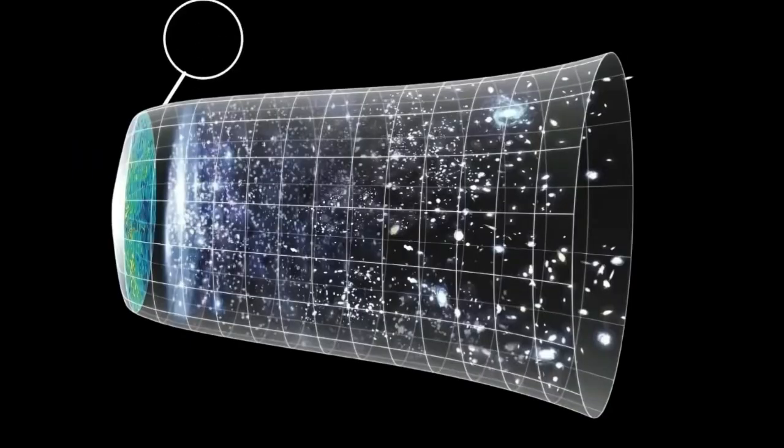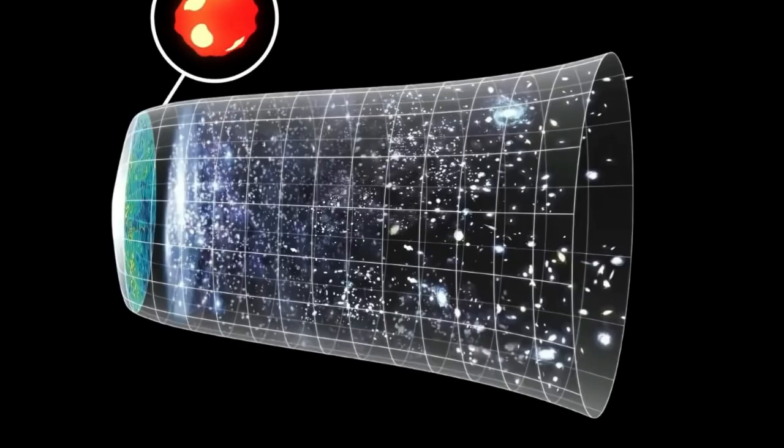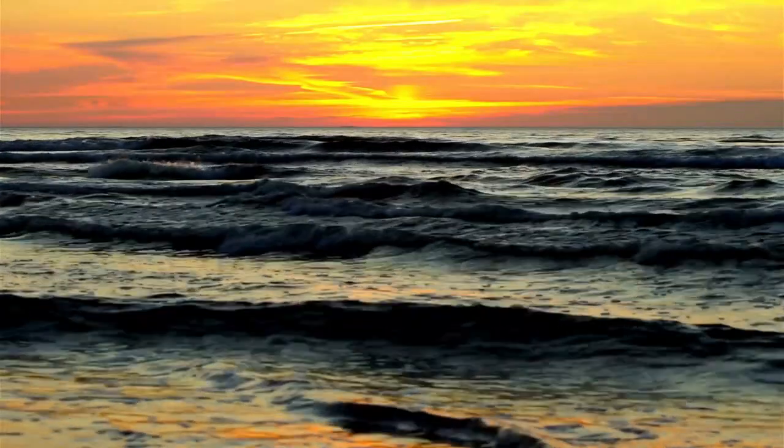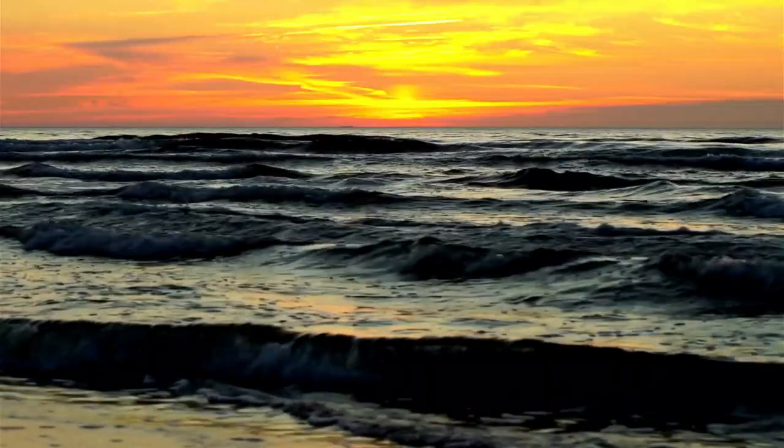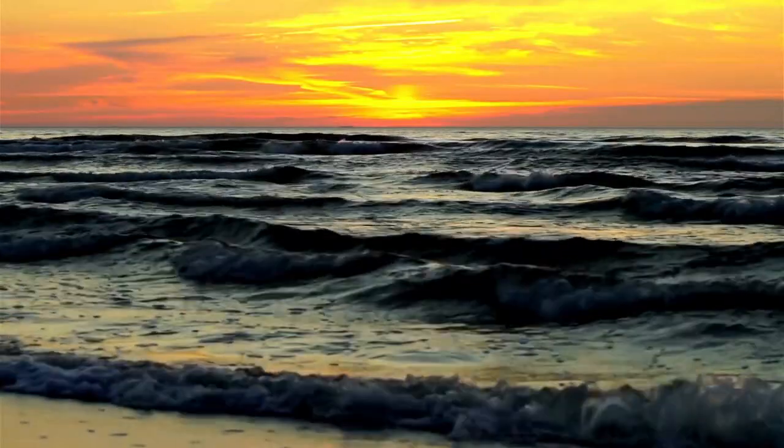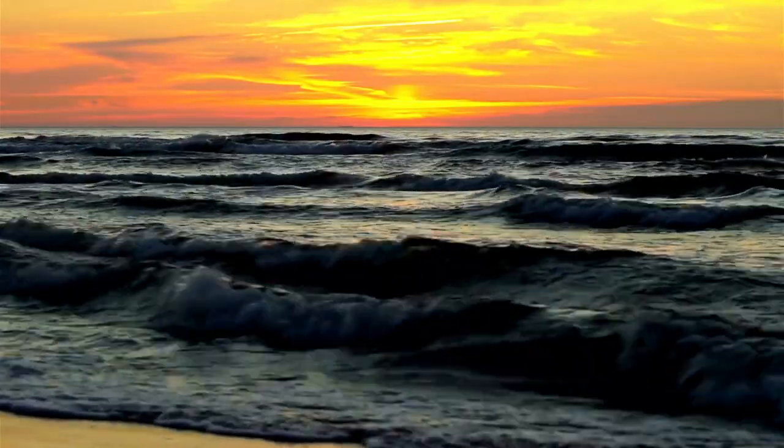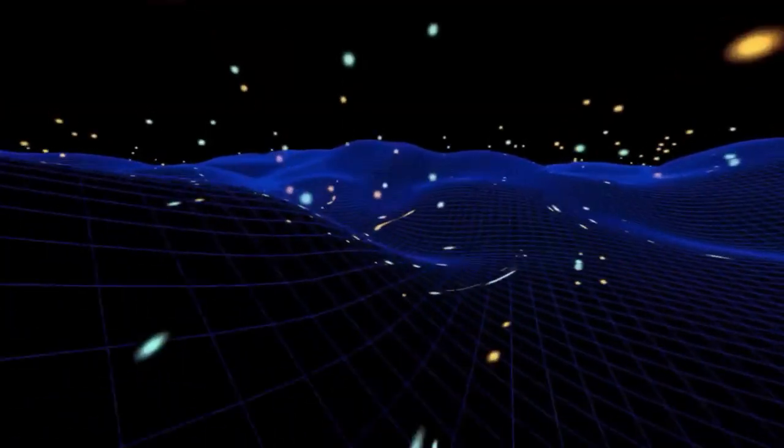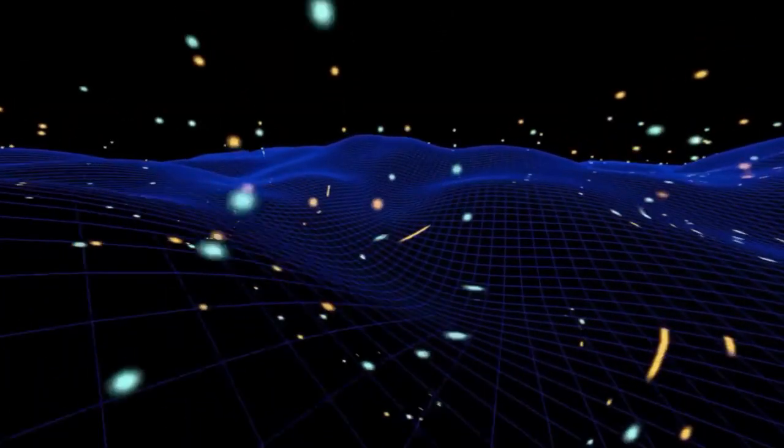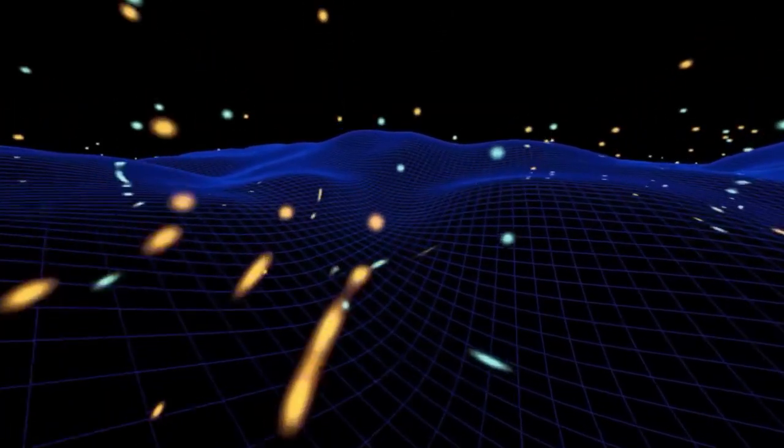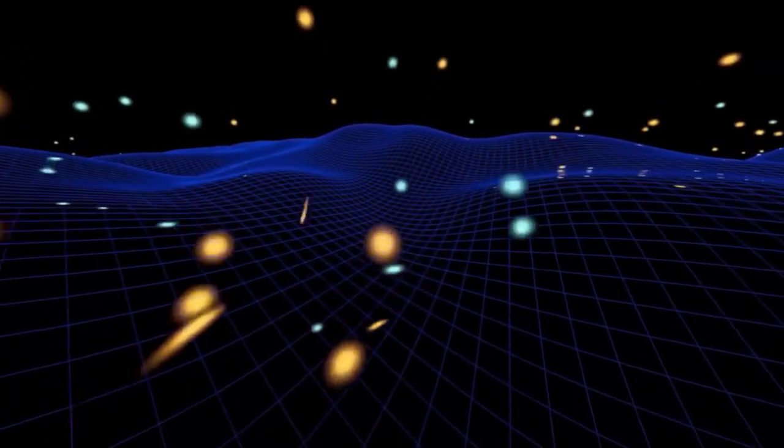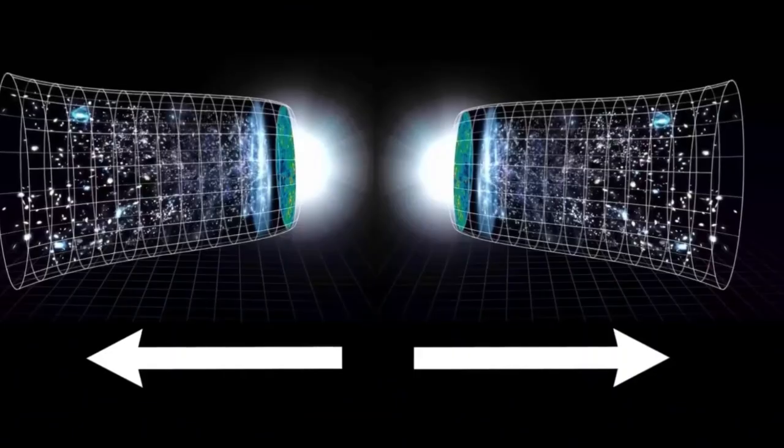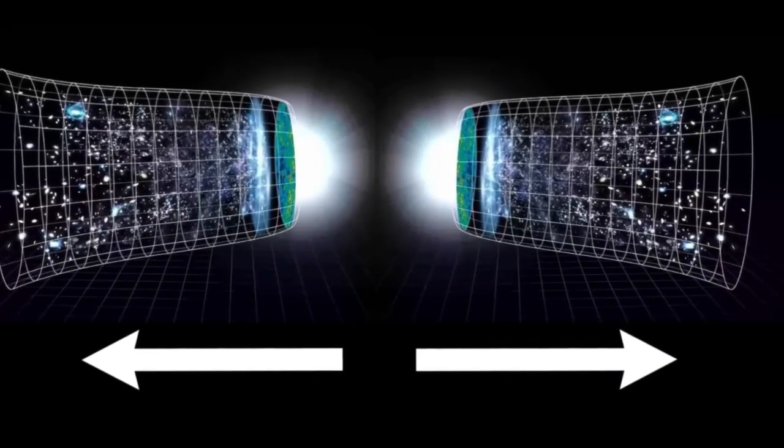Regions on opposite sides of our observable universe couldn't possibly have communicated with each other since the Big Bang. Imagine two islands on opposite sides of an ocean with identical cultures despite never having contact. How could this happen? The universe hasn't existed long enough for light or any signal to travel between these distant regions. For these regions to reach the same temperature, they must exchange energy, requiring communication.